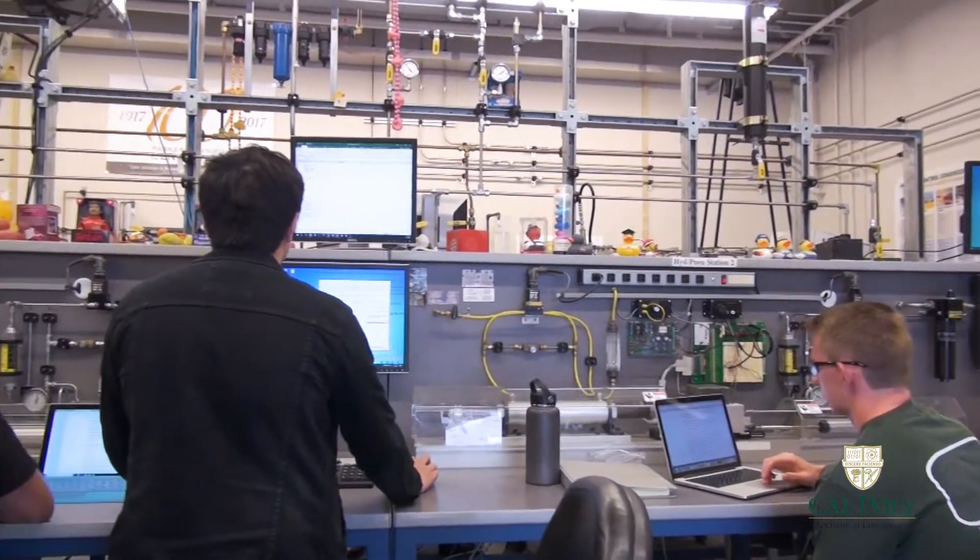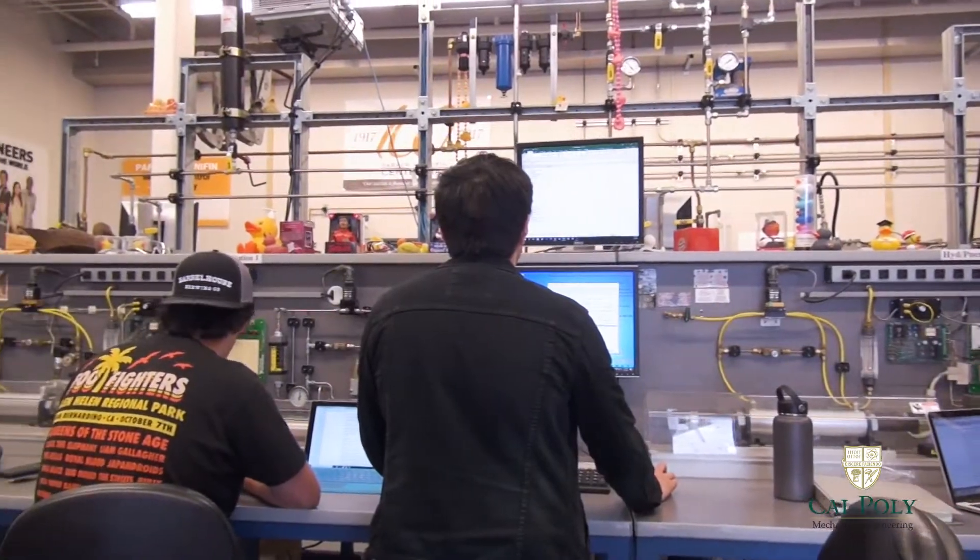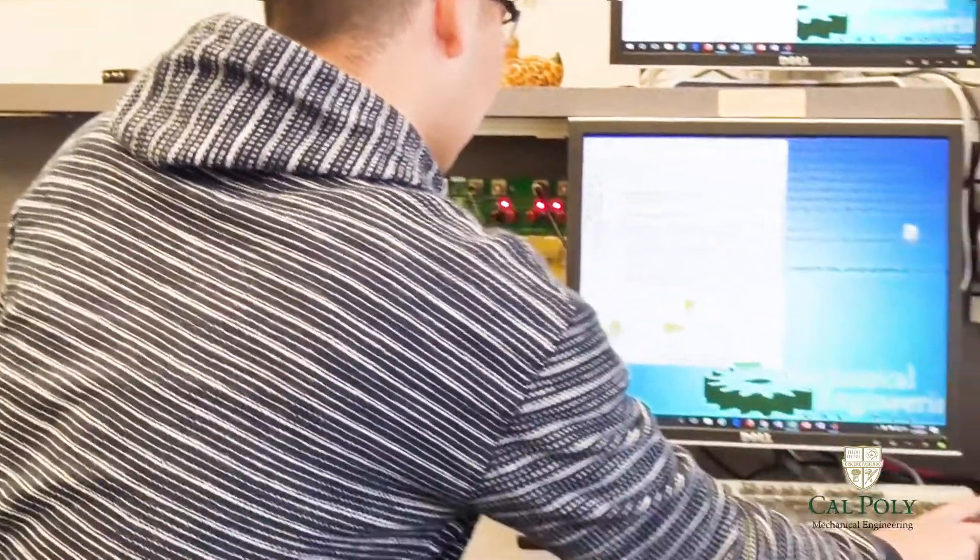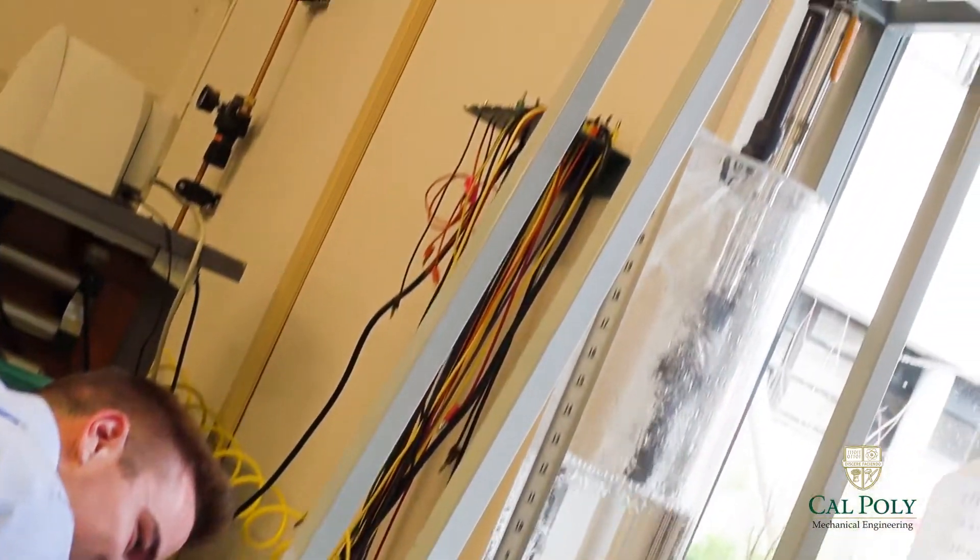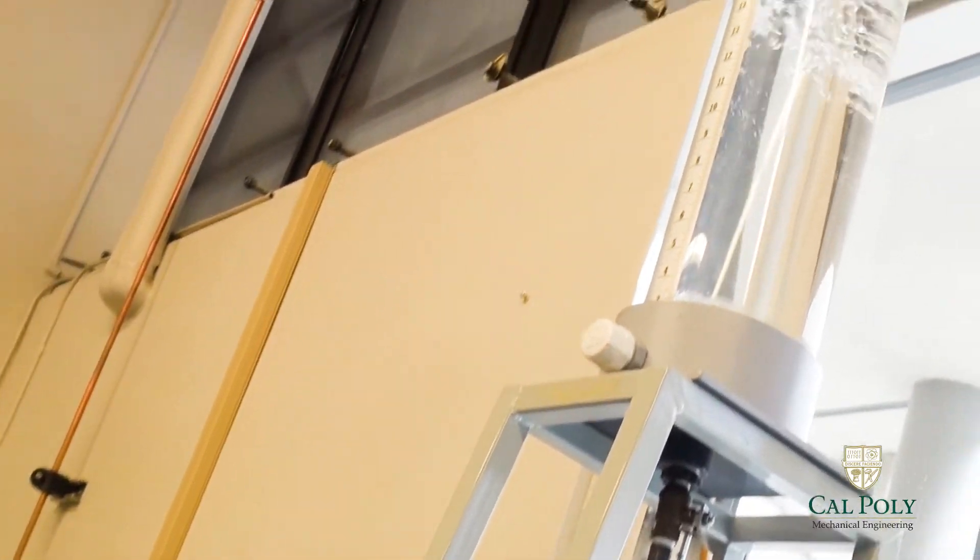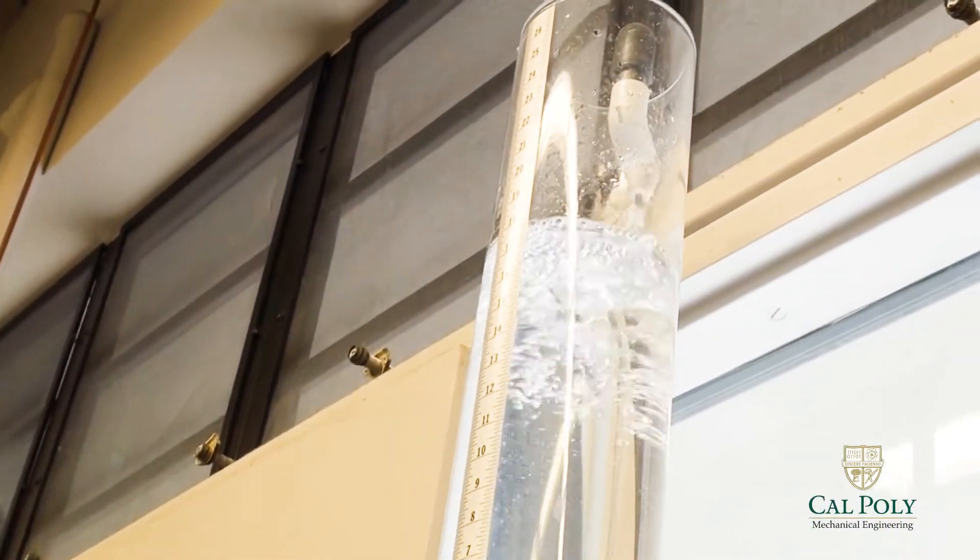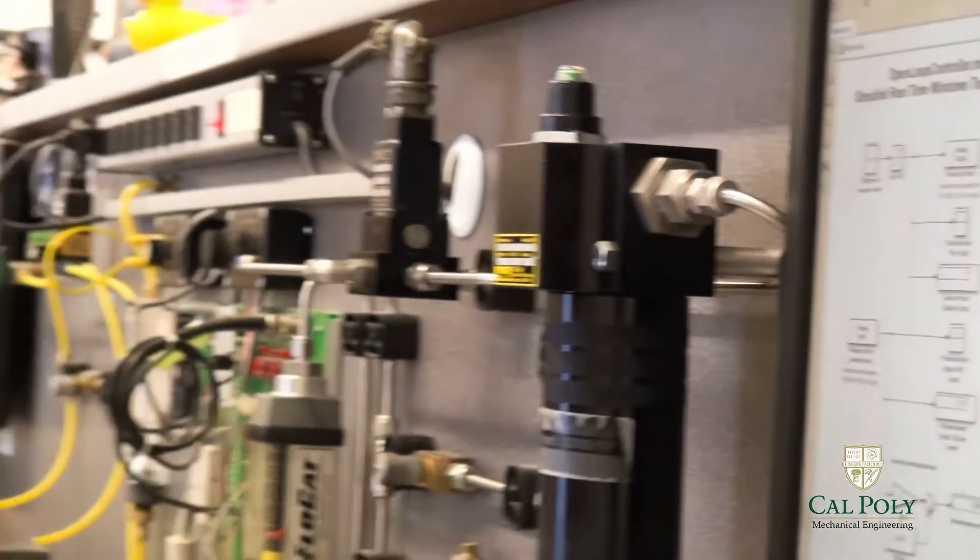The other groups are working on what we call a water tank experiment, where they're trying to control the height of water in a tank. And the common theme in all of these is automatic control systems. So the system is measuring what's going on and feeding back that signal electronically to try to control some variable.